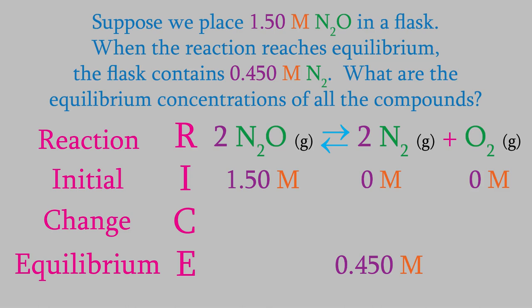First, let's look at the row we skipped for the change in the concentrations. We don't know how much the concentration of N2O, or oxygen, changed yet, but we can see that the nitrogen went from a concentration of 0 to 0.450. That means the change was positive 0.450 molar.